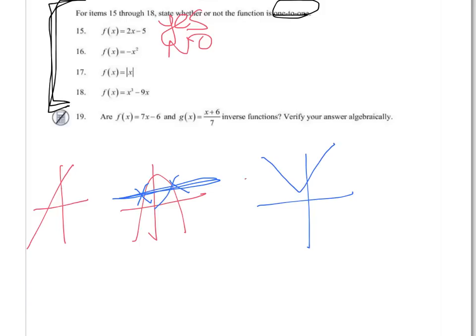17 is not one-to-one. And 18, if you look at that in your graphing calculator and make sure to look zoomed in, so you can see that it's more of this shape, it's not one-to-one.